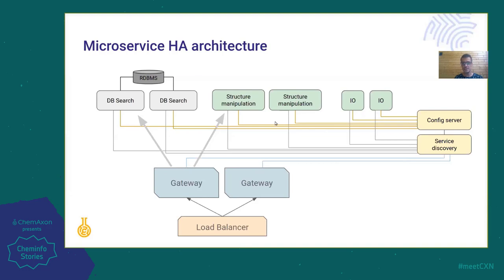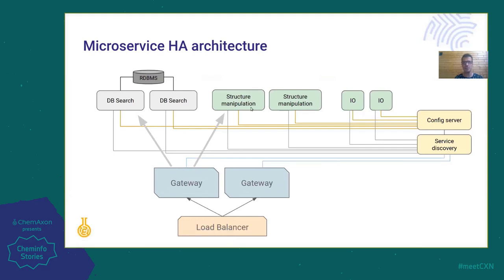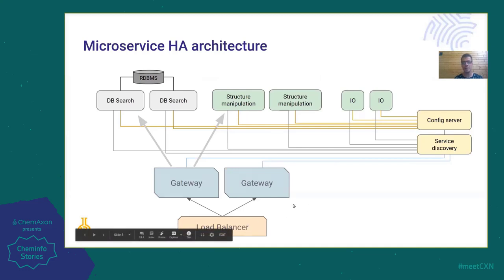In front of these services, we have in this case two gateways, which forward the user request to the specific modules. We have two because of the highly available infrastructure — if one gateway breaks down, the other gateway can take over the load. And in front of this, we have the load balancer, which directs the request to the specific gateway. This was a little bit technical, but I just wanted to mention how you can use this microservice in a cloud environment to create a highly available service.